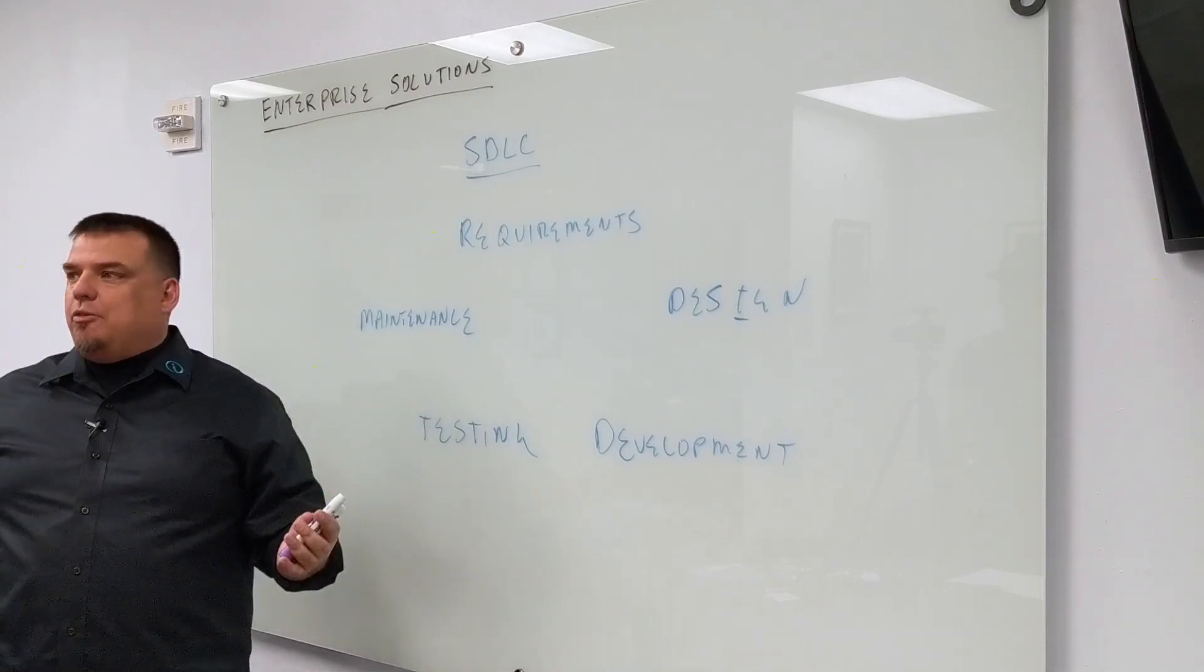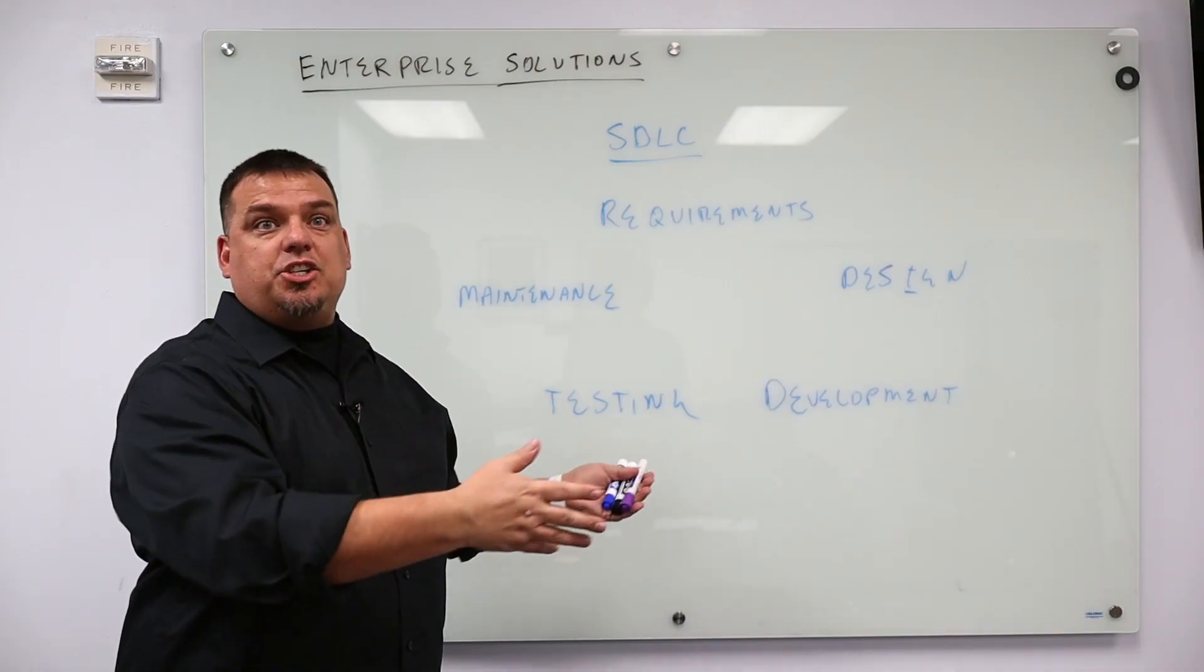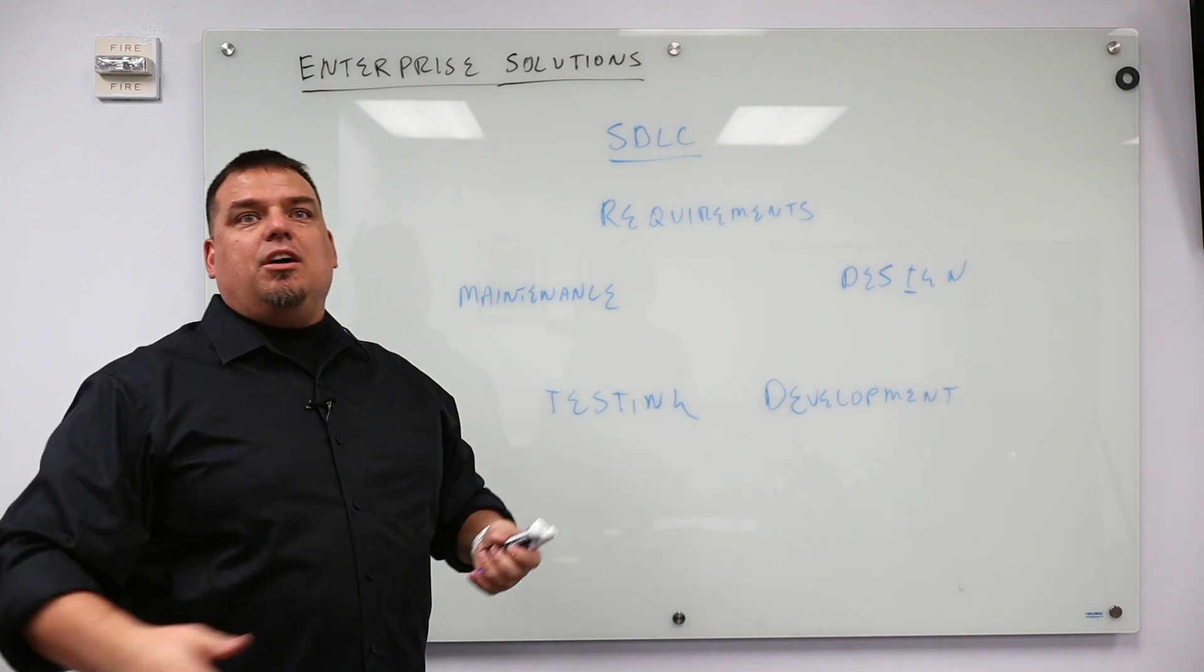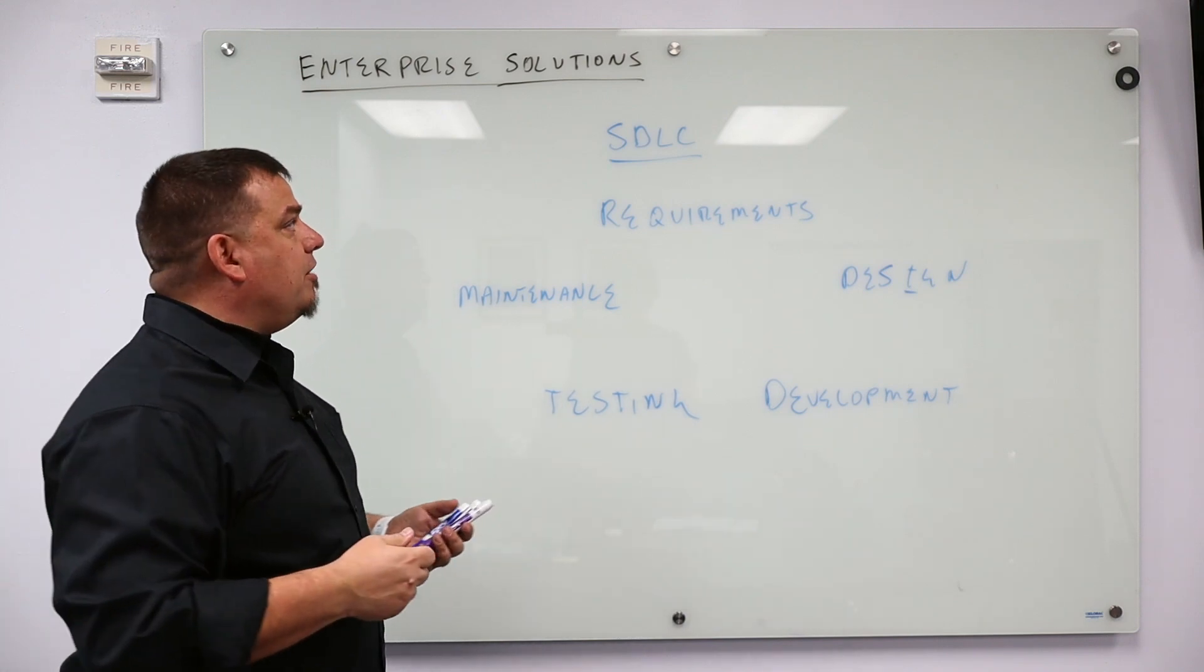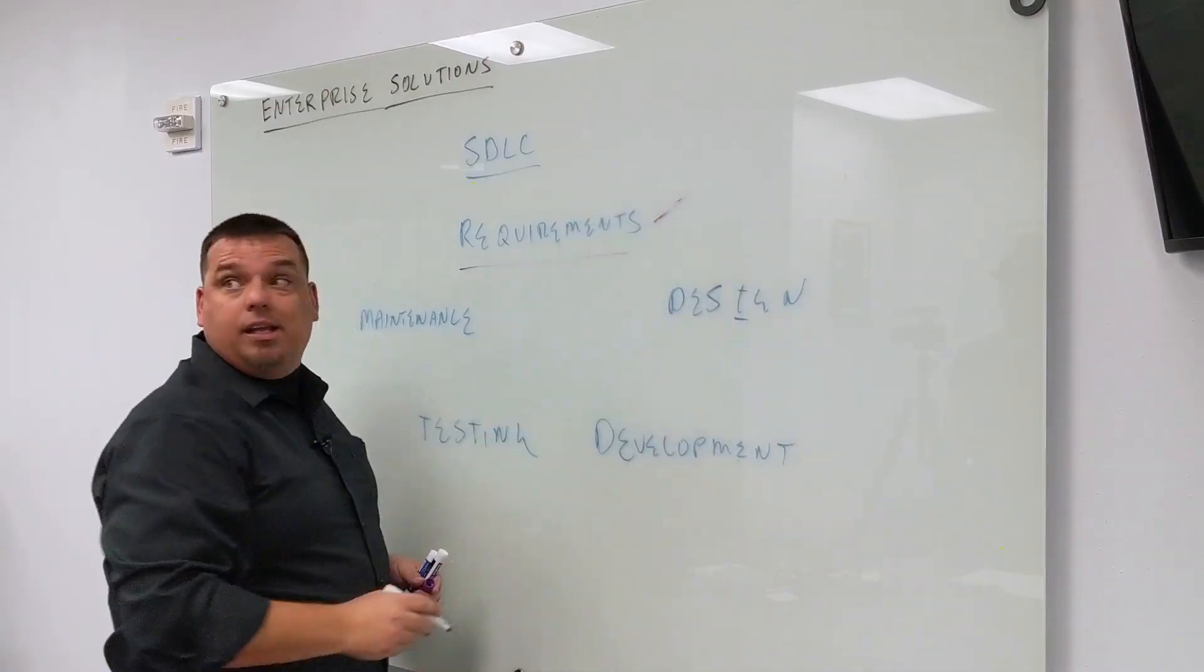When you're developing software, whether I'm building Microsoft Word, Ignition, Factory Studio, or any off-the-shelf software, I'm basically going to go through five steps. I'm going to define the requirements: what features do I want?